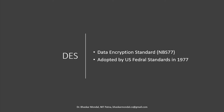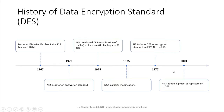DES is a Data Encryption Standard, as you already know. It was first adapted by US federal standards in 1977. If you look at the history of DES, it starts from 1967 when Feistel at IBM proposed Lucifer. Lucifer was a cipher or encryption algorithm developed by IBM which had a block size of 128-bit and key size of 128-bit. Later in 1972, NBS asked for an encryption standard.